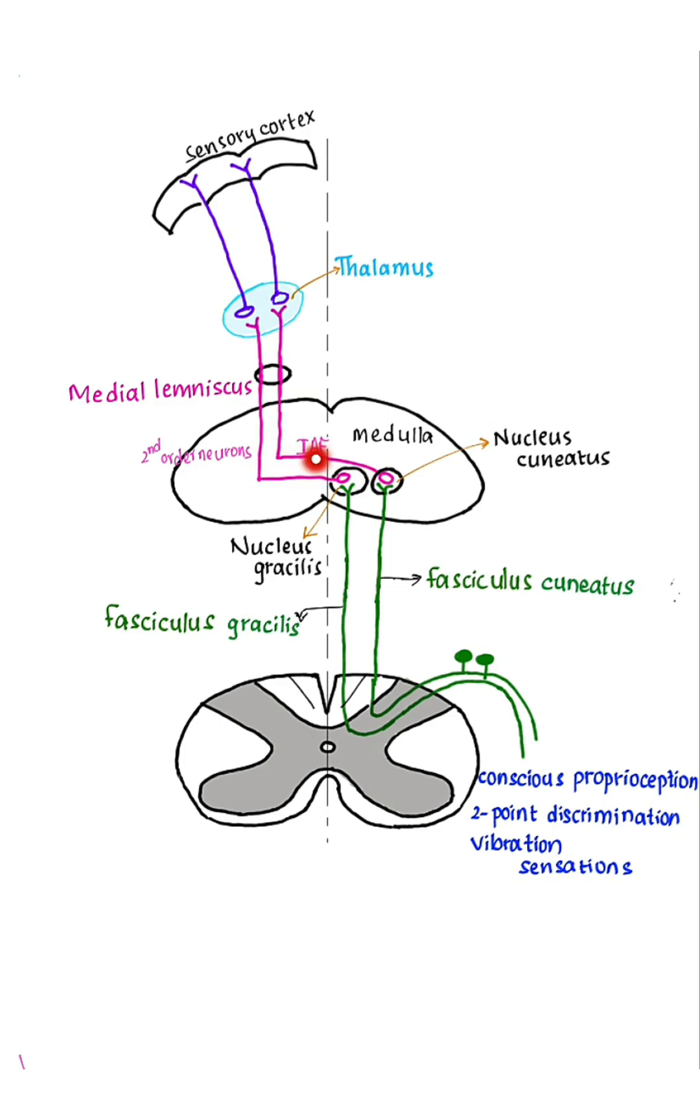Internal arcuate fibers in the lower medulla cross the midline and reach the opposite side, where they turn upwards and continue as medial lemniscus.